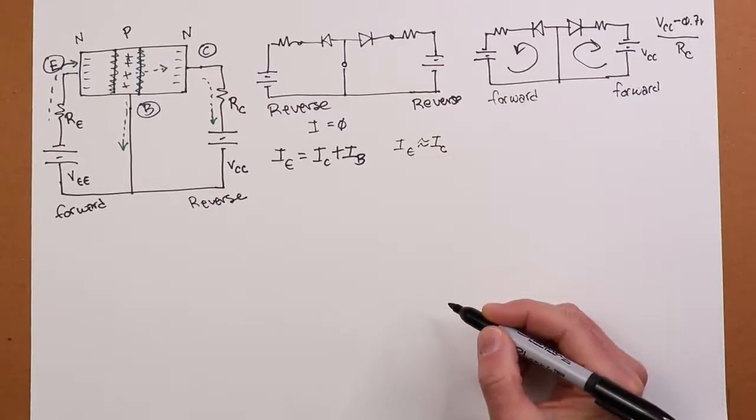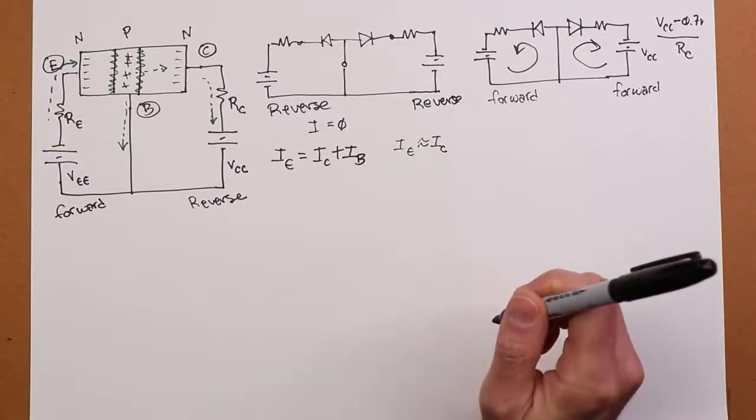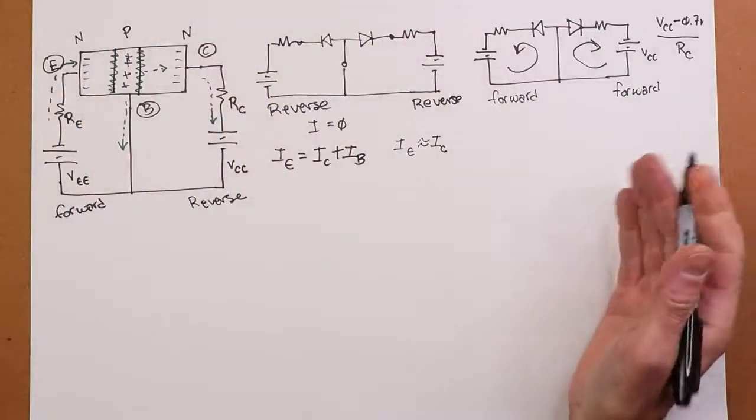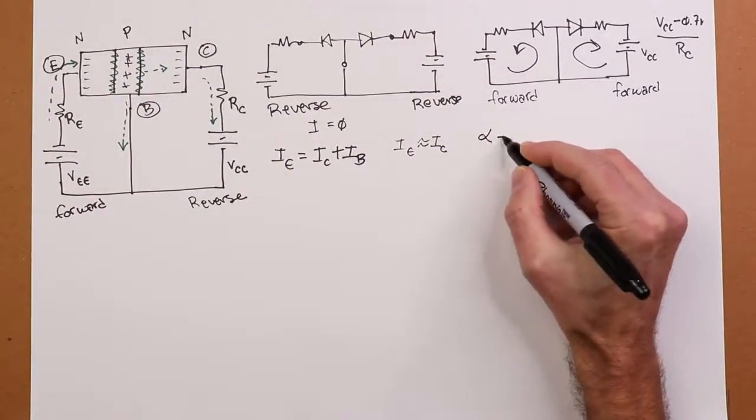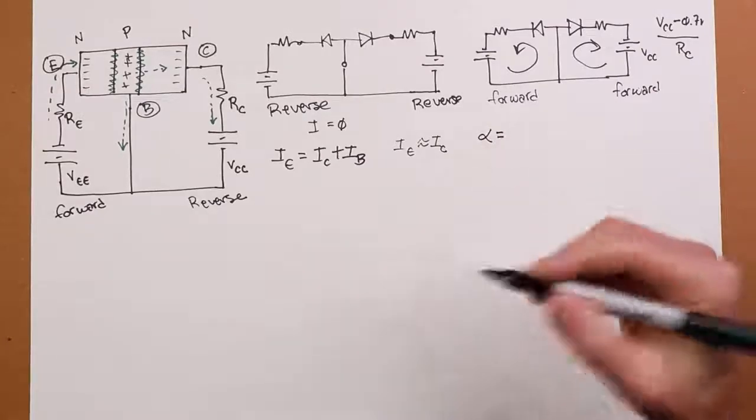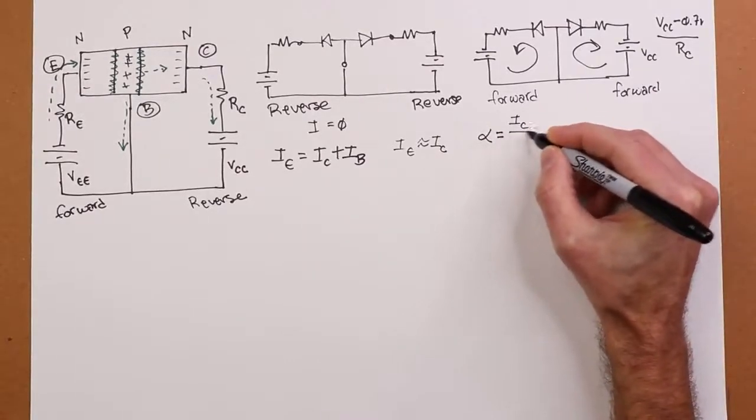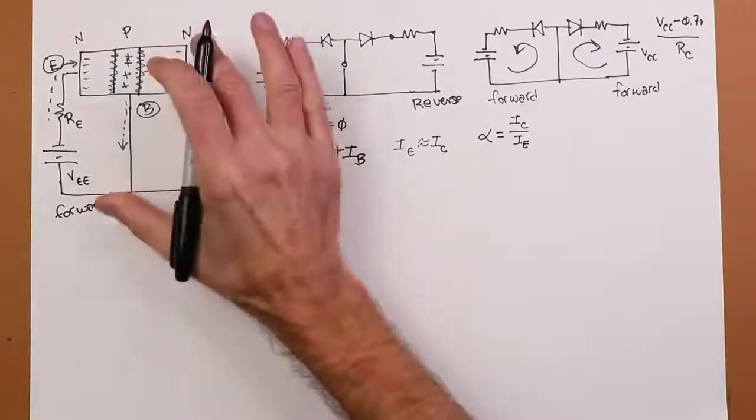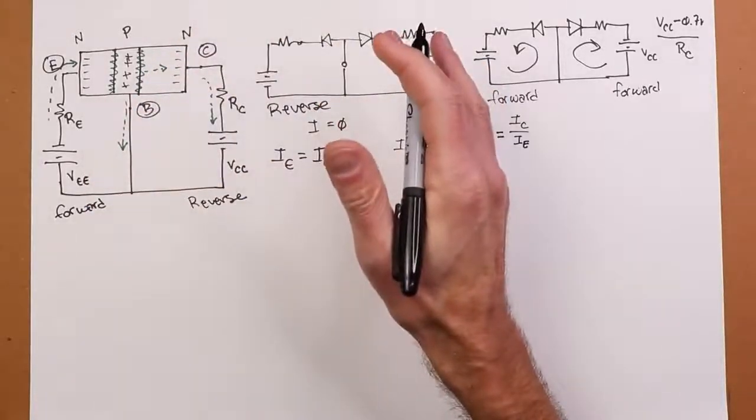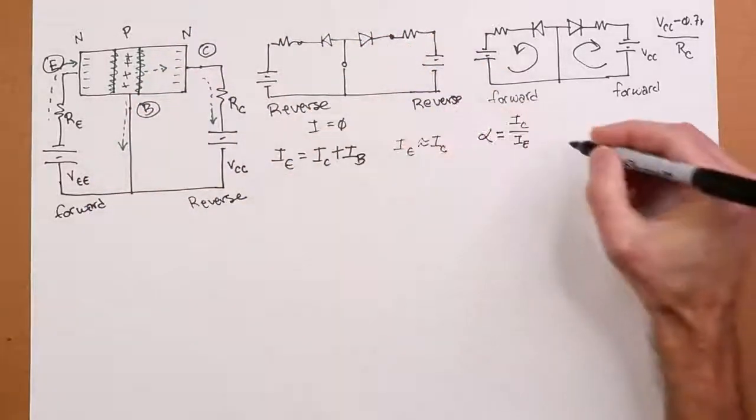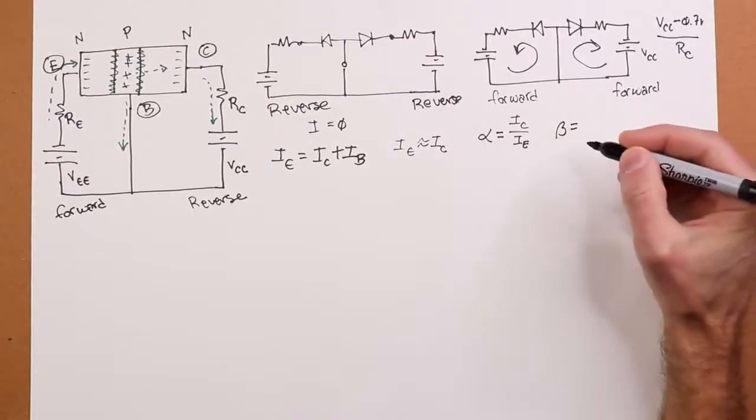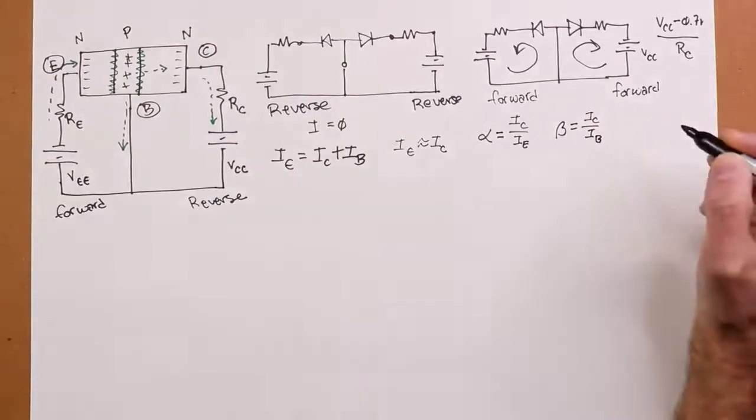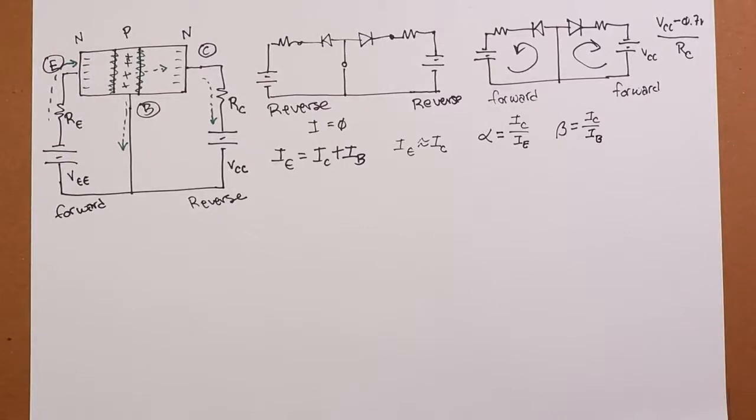Okie doke. Now put some figures of merit on here. We talk about the percentage that actually gets through into the collector. That's called alpha. So alpha is defined as collector current divided by emitter current. Another way of defining this is between a ratio of the two exiting currents, the collector and the base. We call that beta. So beta is defined as IC over IB.